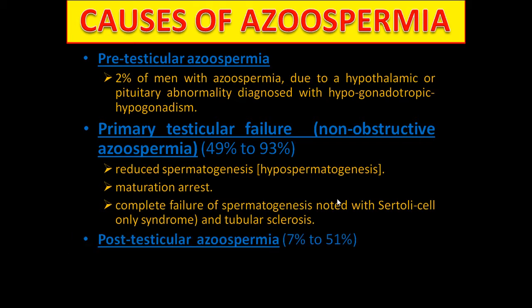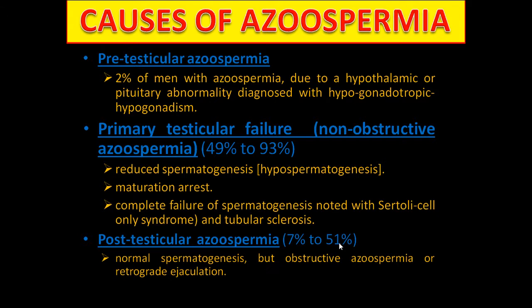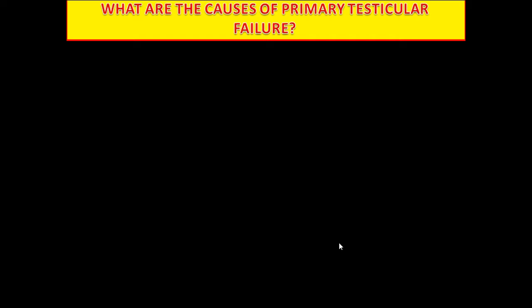Post-testicular azoospermia accounts for 7–51% of cases. It includes normal spermatogenesis but obstructive azoospermia or retrograde ejaculation.